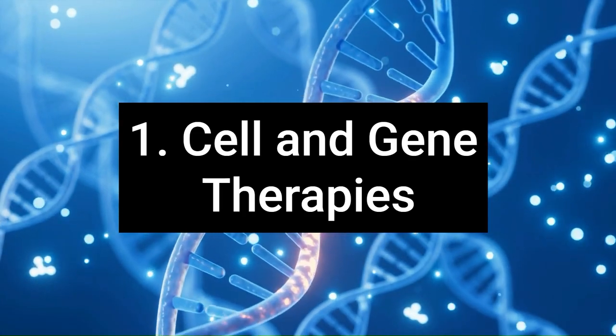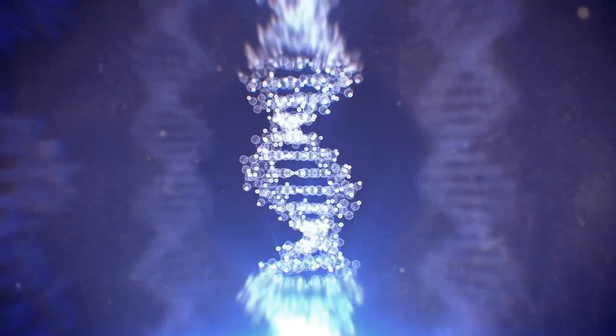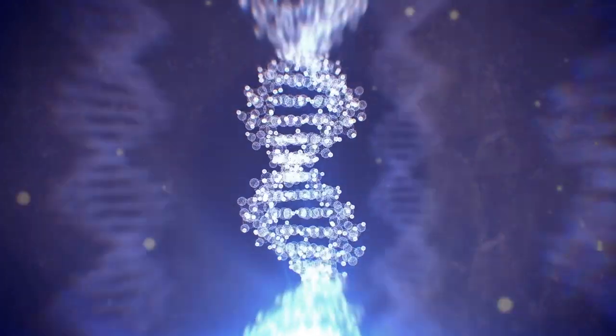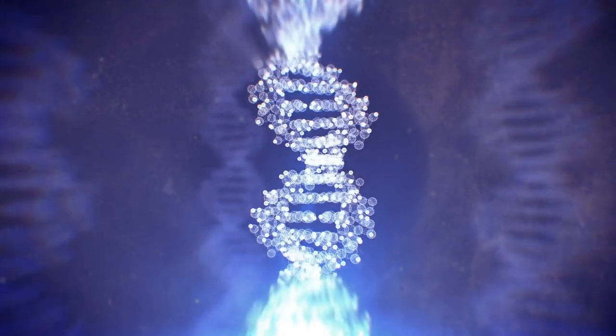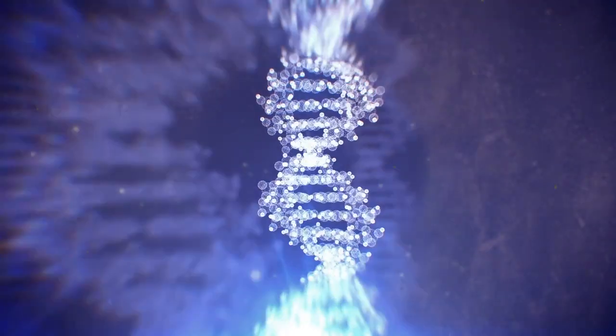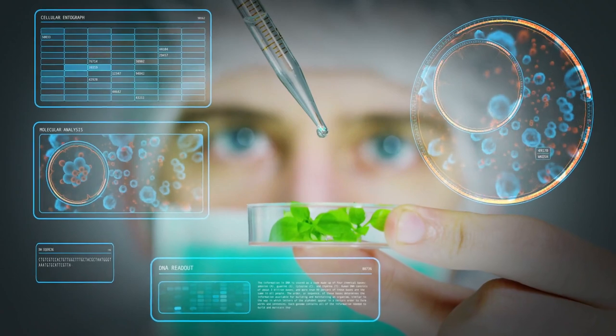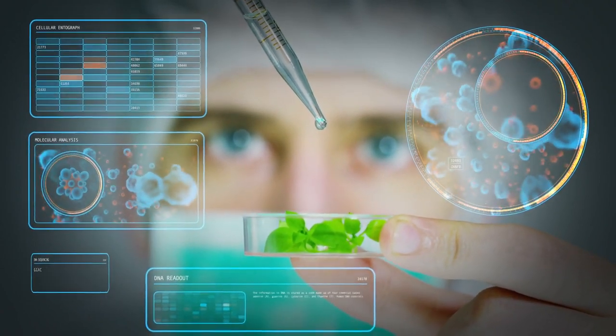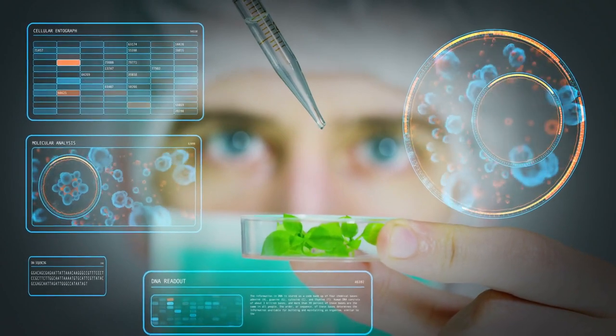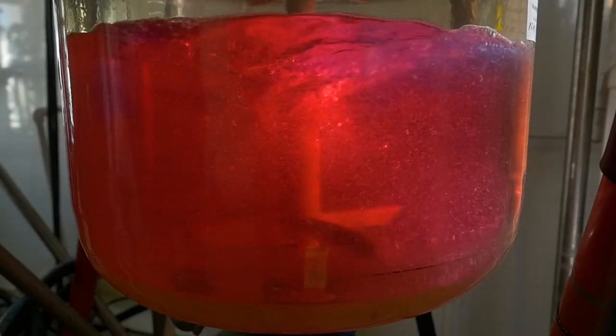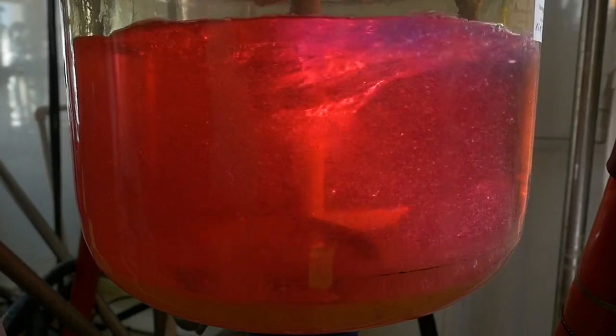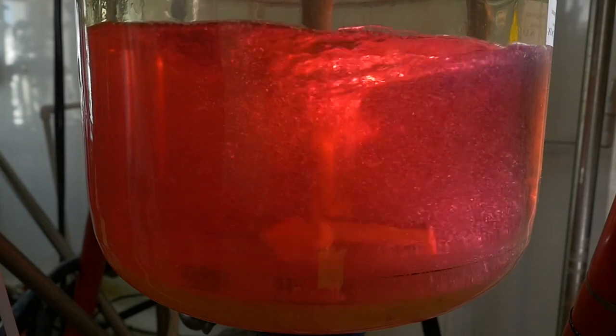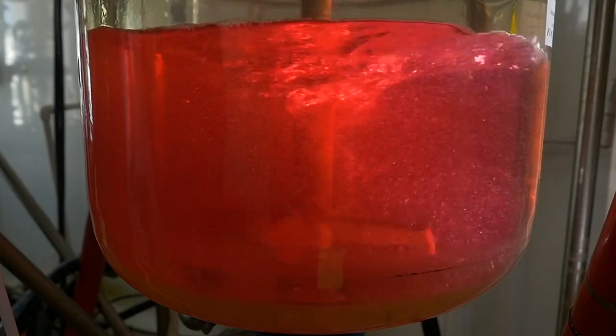Number 1: Cell and Gene Therapies. These therapies, designed to target diseases at the cellular and genetic levels, are transforming medicine by utilizing the body's natural mechanisms to combat complex illnesses like cancer and genetic disorders. By modifying or correcting faulty DNA and harnessing the power of immune cells, these treatments offer a more personalized and effective approach to healthcare. Advances in cell and gene therapies not only signify a shift towards targeted treatment strategies, but also highlight a future where many incurable diseases could become manageable.